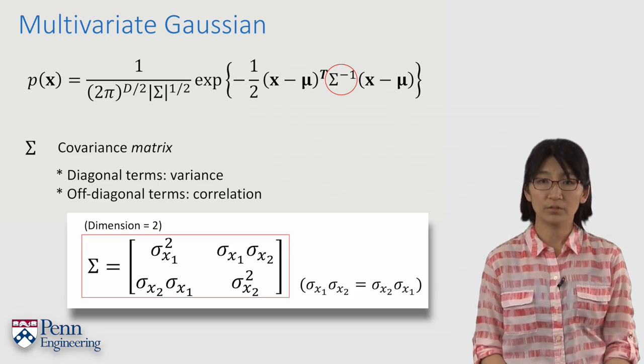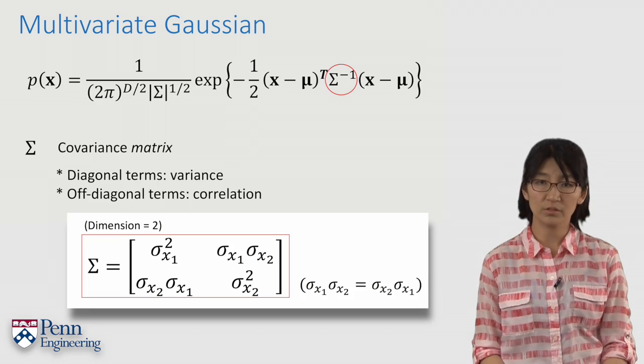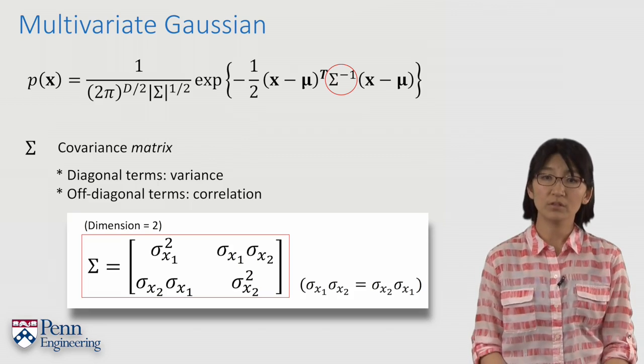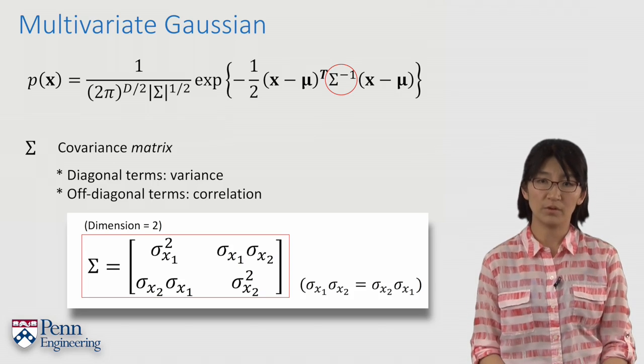The off-diagonal terms, sigma sub x1, x2 squared, represent correlations between the two variables. A correlation component represents how much one variable is related to another variable.